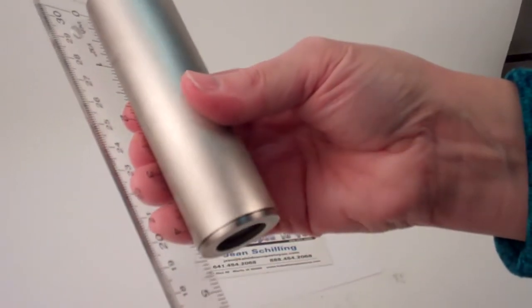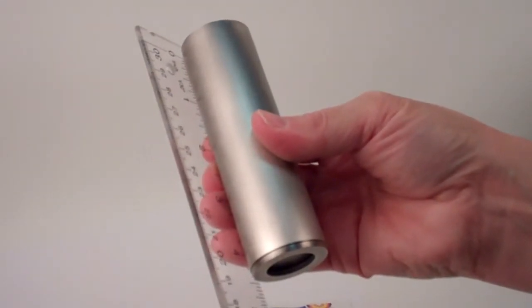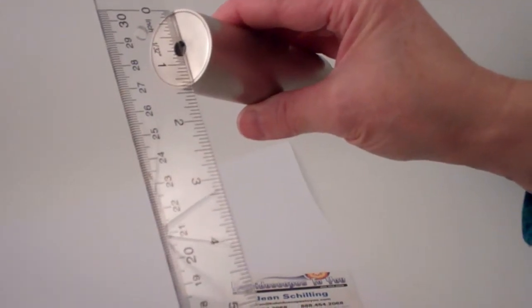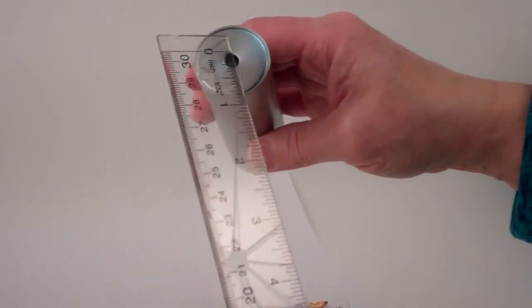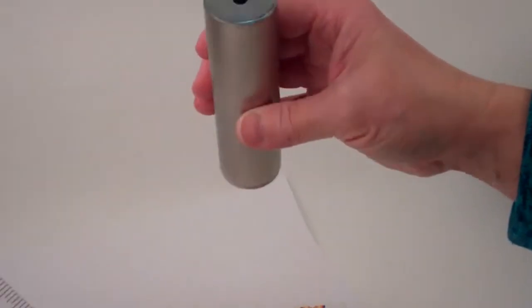The overall length of the entire kaleidoscope is four and a half inches. Its diameter is about one and three-eighths of an inch, and the opening to the mirror system is a quarter of an inch.